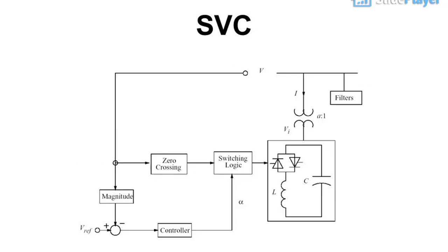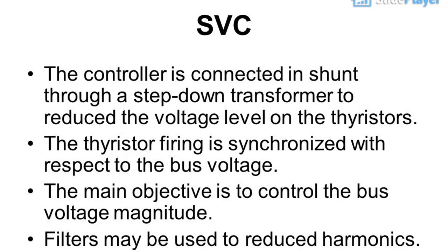SVC: the controller is connected in shunt through a step-down transformer to reduce the voltage level on the thyristors. The thyristor firing is synchronized with respect to the bus voltage. The main objective is to control the bus voltage magnitude. Filters may be used to reduce harmonics.